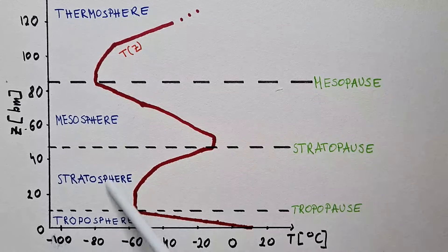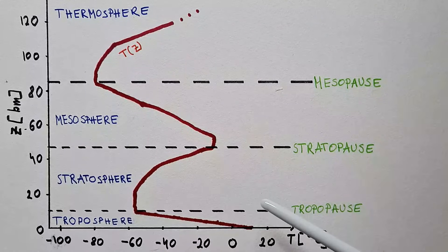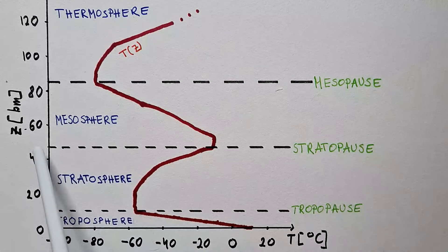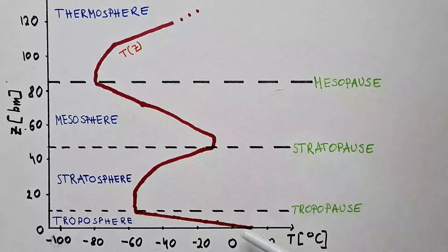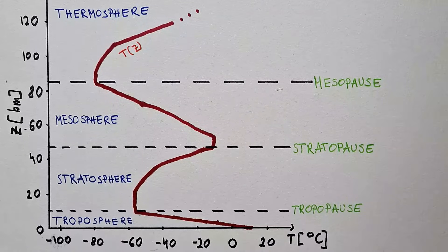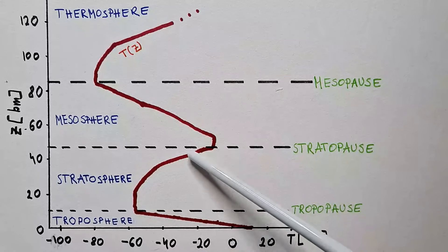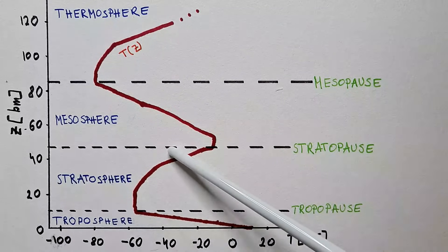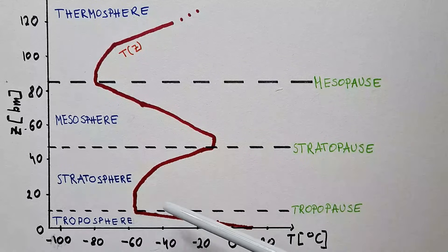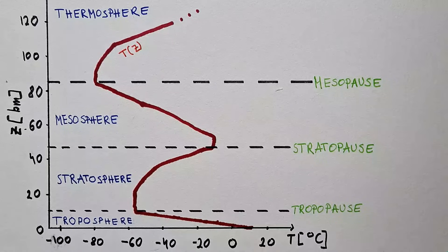The next layer in our atmosphere is the stratosphere, between approximately 11 kilometers and 47 kilometers above the surface. The top of this layer is called the stratopause. Here, temperature does not decrease with height. Instead, temperature is first fairly constant and then it is actually increasing with height. Temperature overall increases with height in the stratosphere because of ozone, which absorbs UV light and protects all living creatures from the harmful impacts of UV radiation.